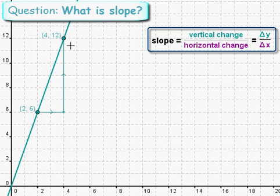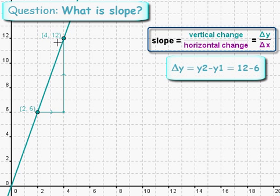How much is delta y? Well, the y coordinate here is 12 and the y coordinate here is 6. So delta y is 12 minus 6 equals 6. The change in y is the y coordinate of the second point minus the y coordinate of the first point.